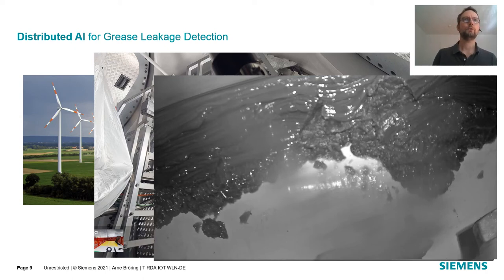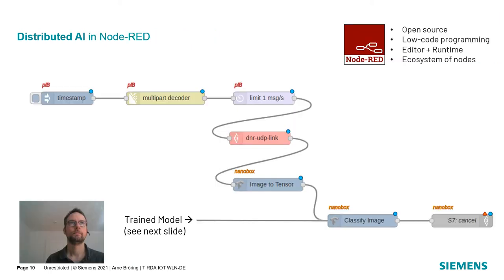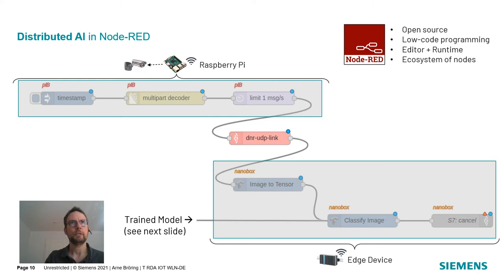We plan to approach this using a camera inside the turbine hub observing this bearing, and then running an AI to detect whether there's oil on the images or not. You see here the implementation of our application that does the AI inference, implemented in Node-RED and consisting of multiple so-called Node-RED nodes connected to form a data flow. This application is distributed over two devices: the upper part is run by a Raspberry Pi, which deals with getting the video stream and sending image by image to the network. The images are then sent to an edge device which has enough compute resources to run the AI inference.